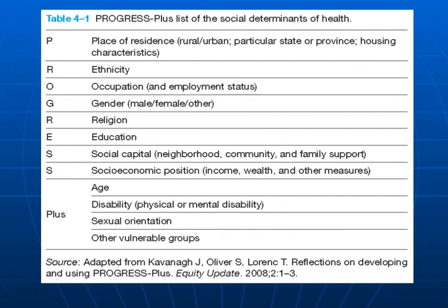I'm going to leave you with this great table, which again focuses on the social determinants of health. I think this is important to keep in mind throughout this course and the various lectures you'll hear. I like how they map out these social determinants: place of residence — rural and urban, we have discussed that; ethnicity or race, we have discussed that today. And these others will be introduced throughout the course. I hope you have enjoyed this lecture and have a great day.